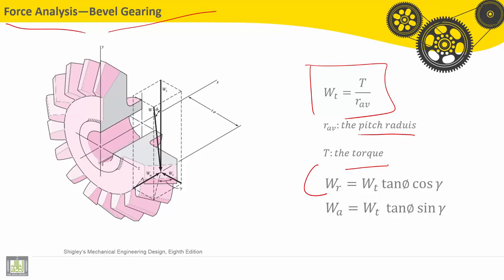The radial force, WR, which is presented here, is equal to the tangential force Wt multiplied by tangent phi, this is angle phi, and cosine gamma, this is the angle gamma.